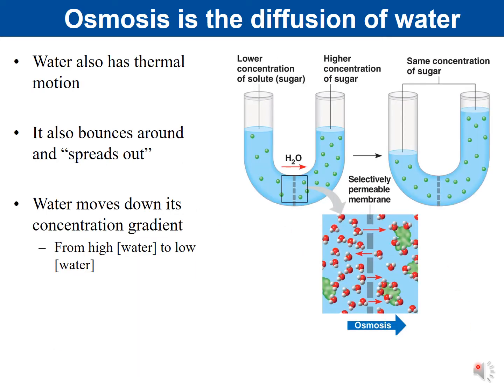Water also has thermal motion and will bounce around and work to spread out. Water will also move down the concentration gradient, going from its high water concentration to its low water concentration. To understand how this works, we need to review and talk about water.